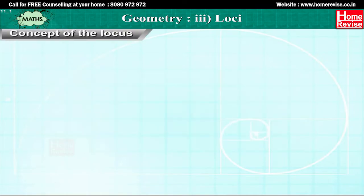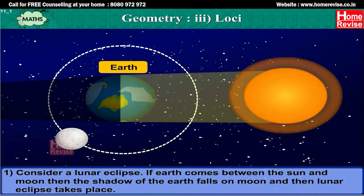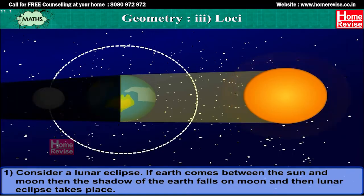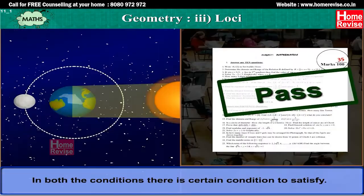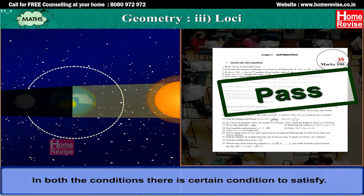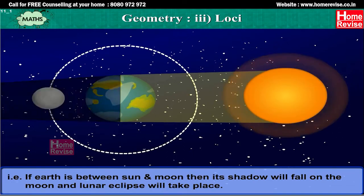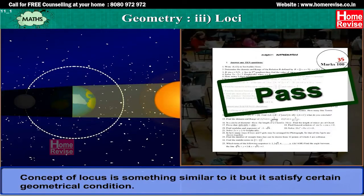Let's start with the concept of locus. Consider a lunar eclipse — if the earth comes between the sun and moon, then the shadow of the earth falls on the moon and lunar eclipse takes place. Similarly, out of 100 marks, if a child secures 35 marks then he is said to have passed. In both conditions there is a certain condition to satisfy. The concept of locus is something similar to this.